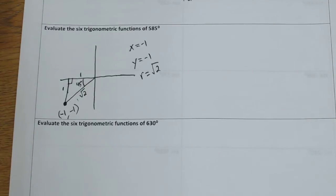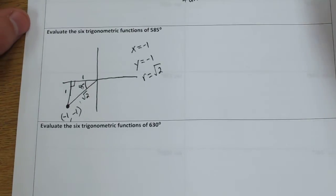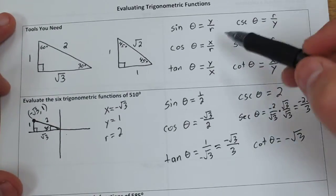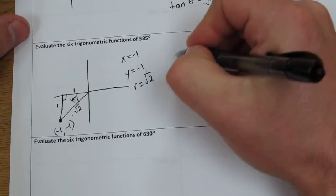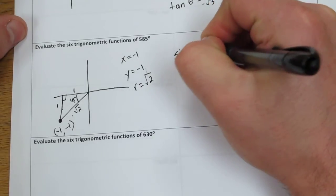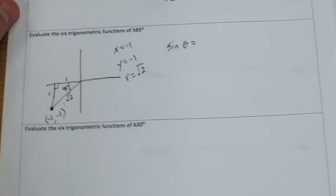Next, what we need to do is evaluate all the functions. Since we have x, y, and r, we can use our trigonometric functions again. In this case, sin theta is going to be y over r, so negative 1 over rad 2.